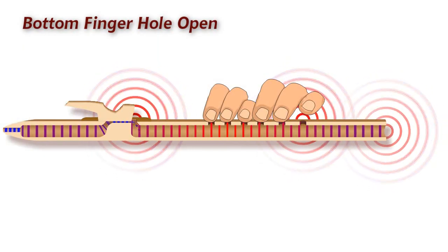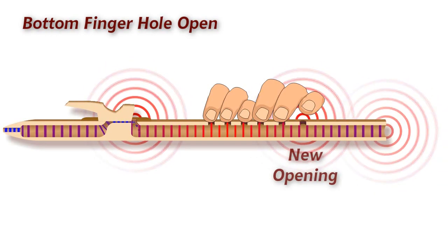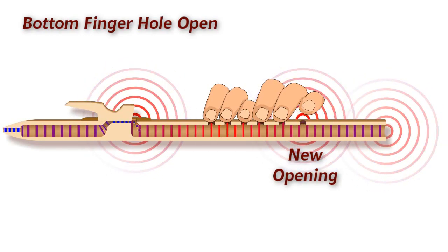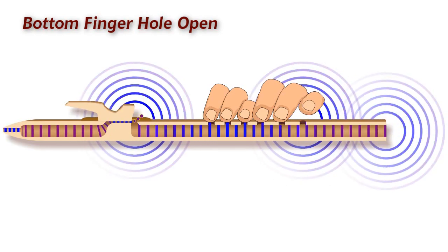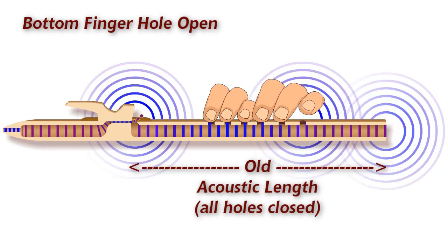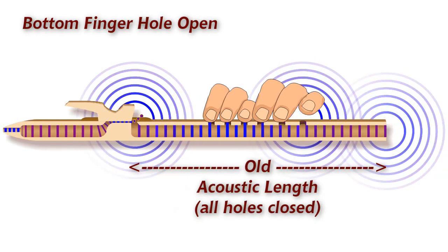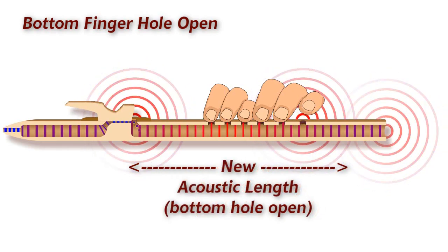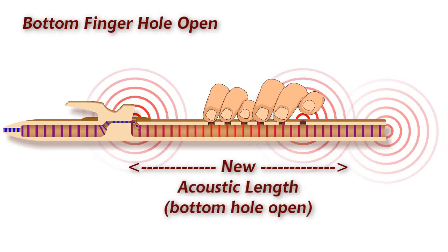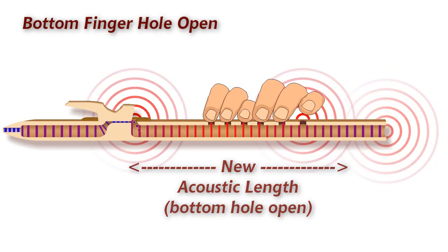Now, what happens if we open the bottom finger hole? Well, first of all, the sound has a new opening to come out of. The sound will come out of any place in the body of the flute that's open to the outside air. And also, and this is the big change, we've made the sound chamber shorter. The air column has a shorter distance to vibrate, and so each vibration cycle takes less time. That gives us more vibration cycles every second, a higher frequency to those vibrations, and our brain interprets that as a higher pitch.